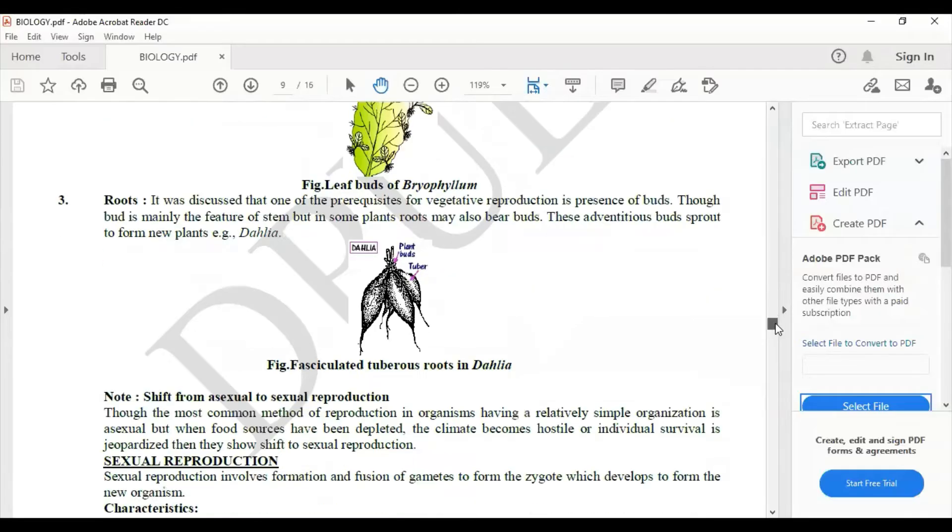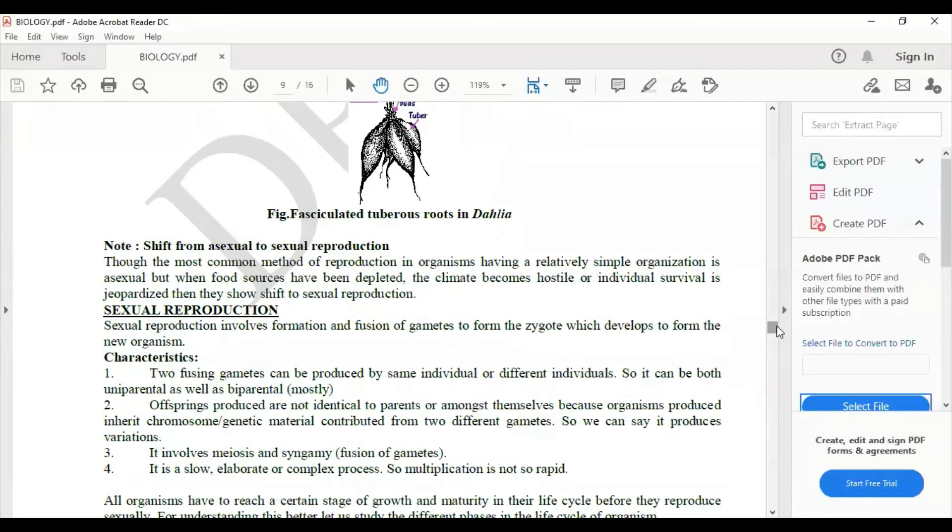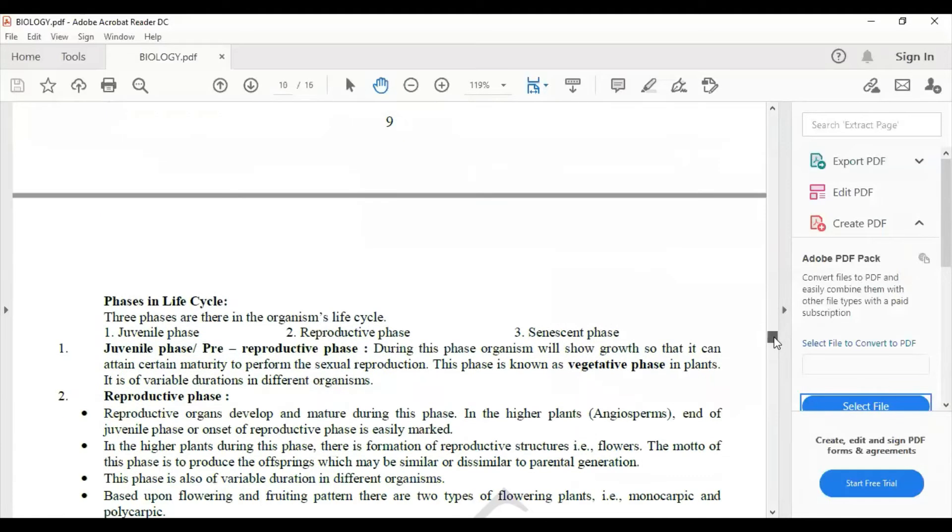Roots - roots example is taken from dahlia. Then moving on to sexual reproduction, characters will be given, phases of life cycle.